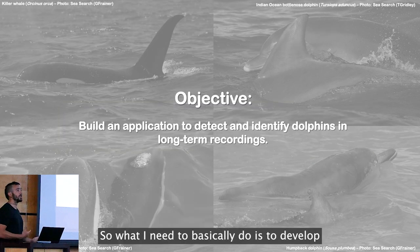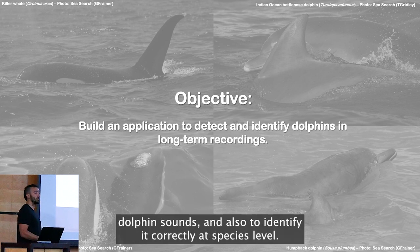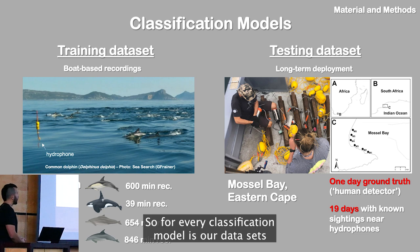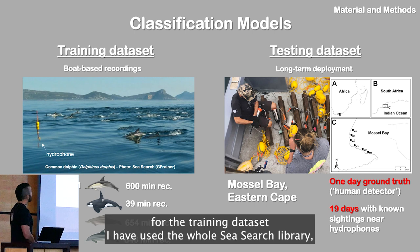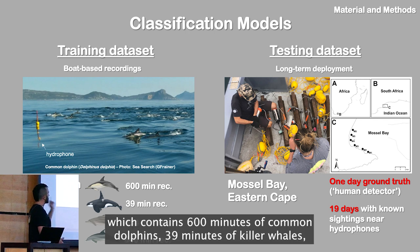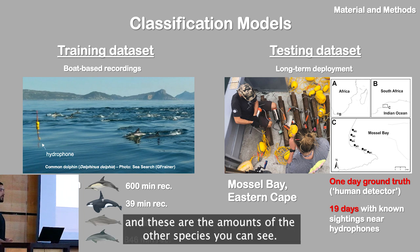So what I need to do is develop an algorithm that will be efficient to detect dolphin sounds and also identify them correctly at species level. For the classification model, the key is the dataset. For the training dataset, I used the whole Seasearch library, which contains 600 recordings of common dolphins, 39 recordings of killer whales, and other amounts from the other species.